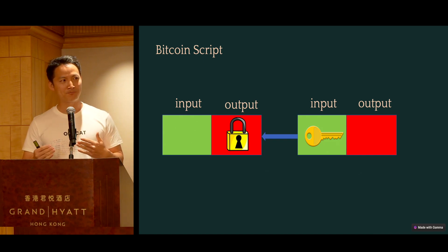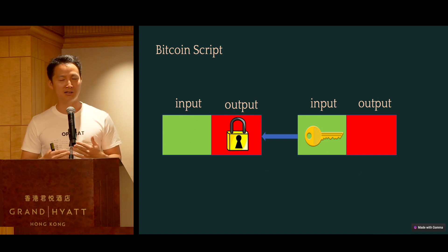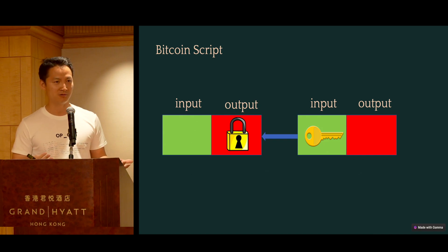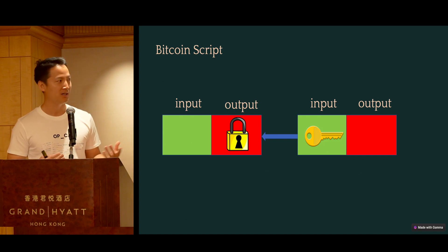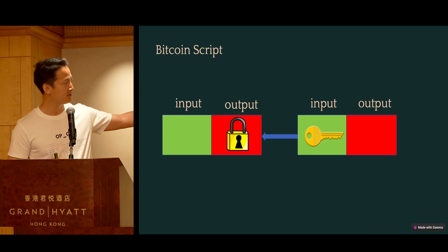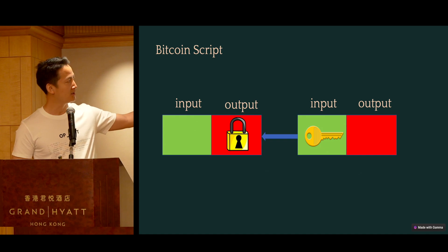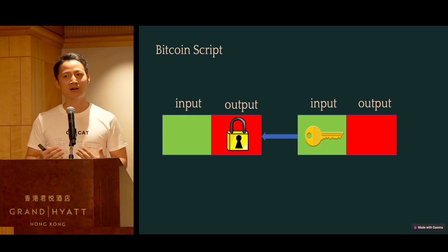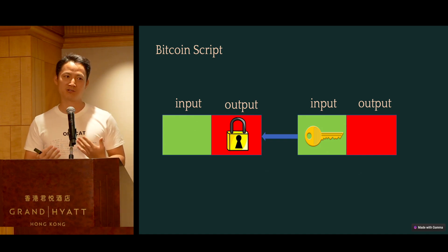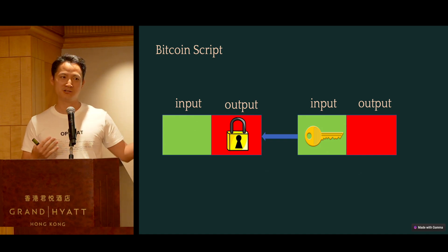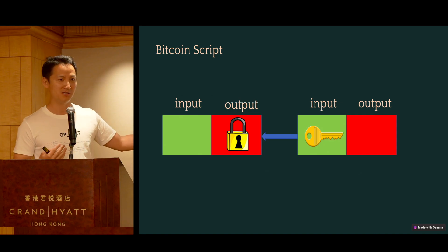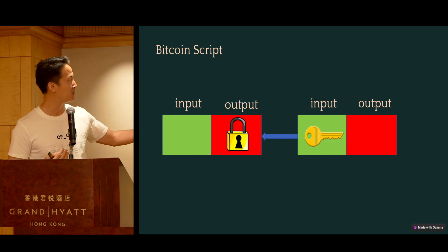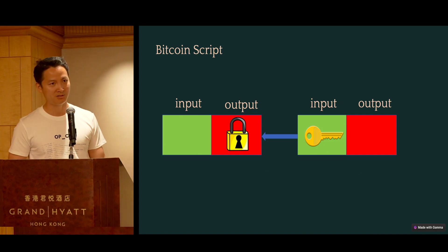So that's how Bitcoin access control works. And the lock and also the key — you can think about that as encoded in so-called computer code. In the Bitcoin world, we call it Bitcoin Script.